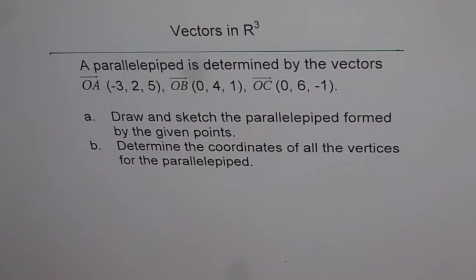Vectors in R³. A parallelepiped is determined by the vectors OA (-3, 2, 5), OB (0, 4, 1), and OC (0, 6, -1). Draw and sketch the parallelepiped formed by the given points. Determine the coordinates of all the vertices for the parallelepiped.